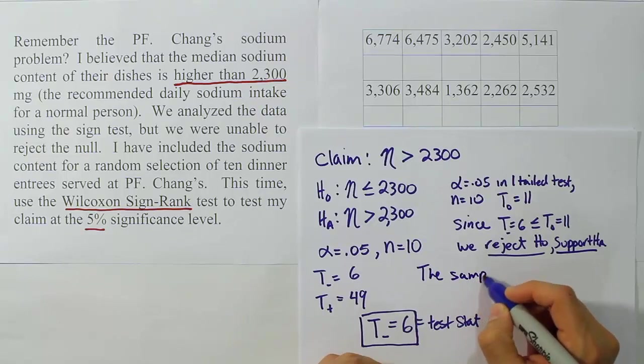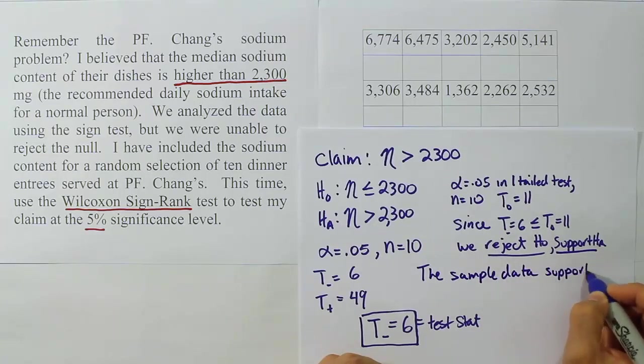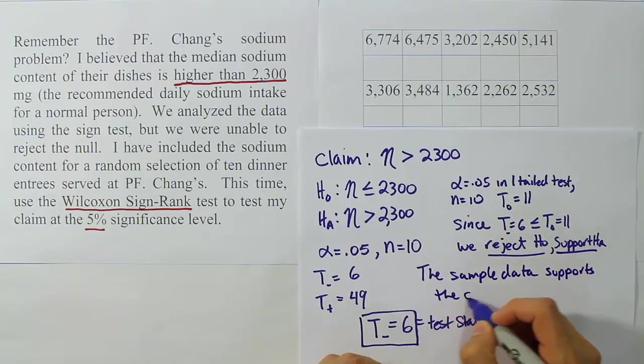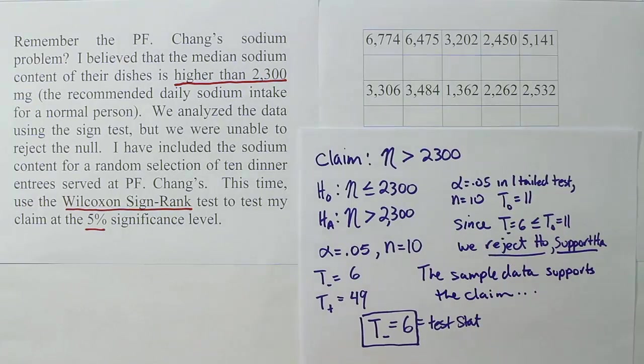So the sample data supports the claim. By the way, those are real sodium contents for dishes at PF Chang's, 10 randomly chosen dishes from PF Chang's. So this sample data is actually real. And so I would say we've basically just conducted a hypothesis test which shows that the sodium content is rather high for the dishes at PF Chang's. There you go.